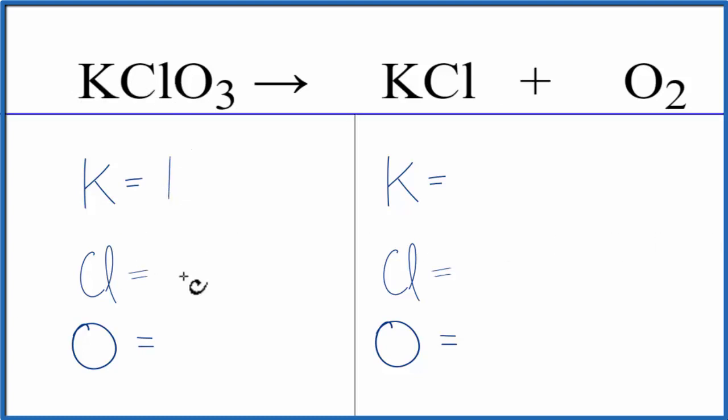We have one potassium, one chlorine, and three oxygen atoms. On the product side, we have one potassium, one chlorine, and two oxygen atoms.